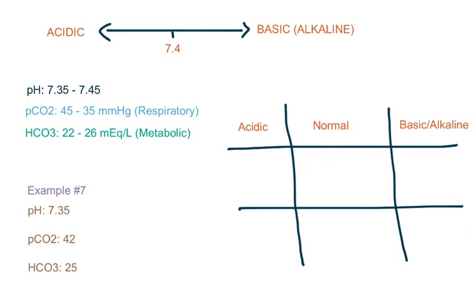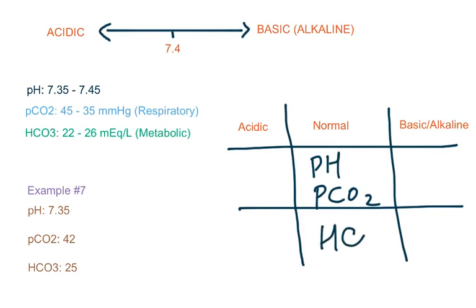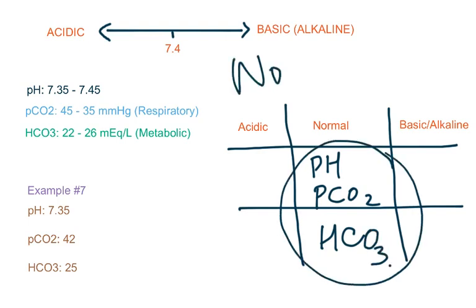Example number 7. pH is 7.35, which is normal. pCO2 is 42, which is between 35 to 45 — also normal. Bicarb is 25, which is between 22 to 26 — also normal. So here we have a normal arterial blood gases result.